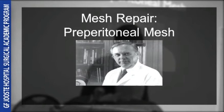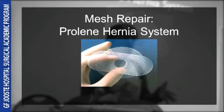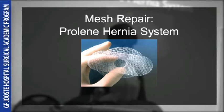The Prolene hernia system is a preformed mesh system that covers all bases — it has a component for the preperitoneal space, a plug, and then an anterior flap. I've never personally seen this used, but I understand it was used routinely in private practice.